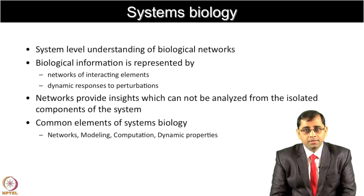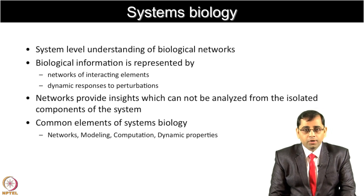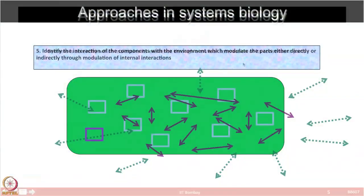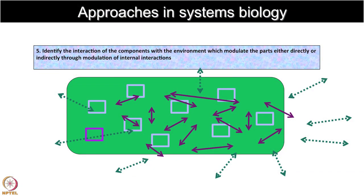What are the common elements of systems biology? They include networks, modeling, computation, and dynamic properties. The system is an entity which maintains its existence through mutual interaction of its constituent parts. System research consists of first identification of the parts, then characterization of these components, excluding ones which are not part of a system, then identifying the interactions of the components with each other, and finally looking at the interaction of these components with the environment which modulates the parts either directly or indirectly through modulation of internal interactions.